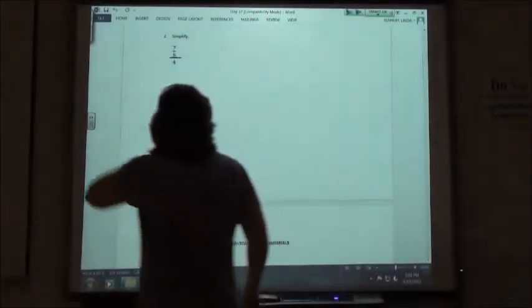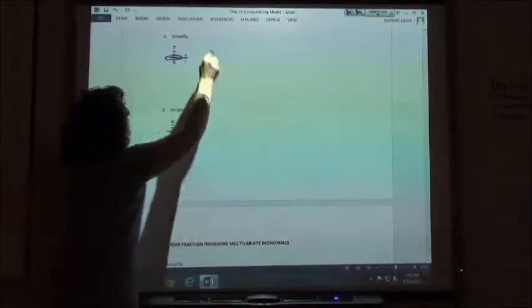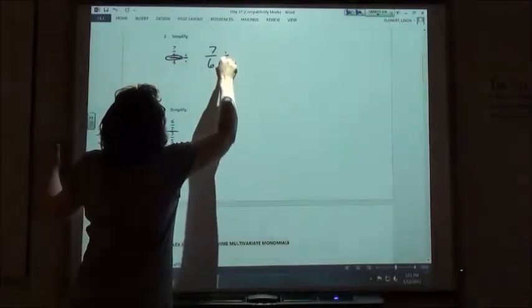So on number 2, same kind of thing. Here's where that bigger bar is. That's where my division would go. So I would have 7 6ths divided by 4.